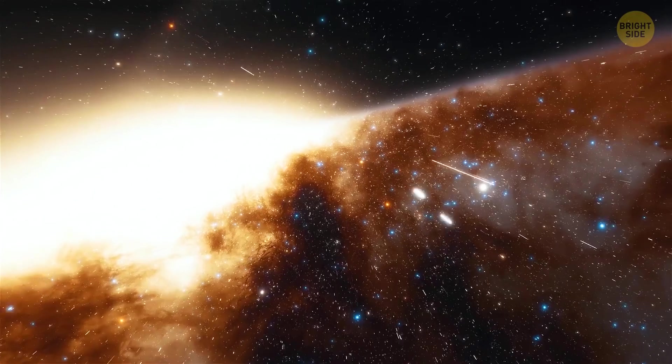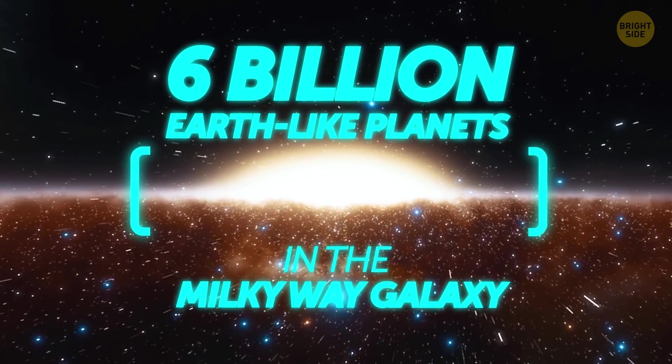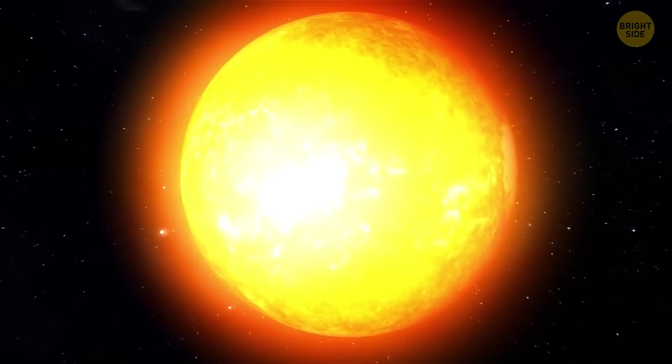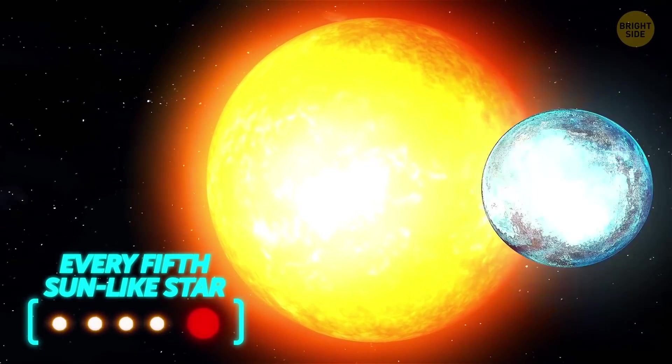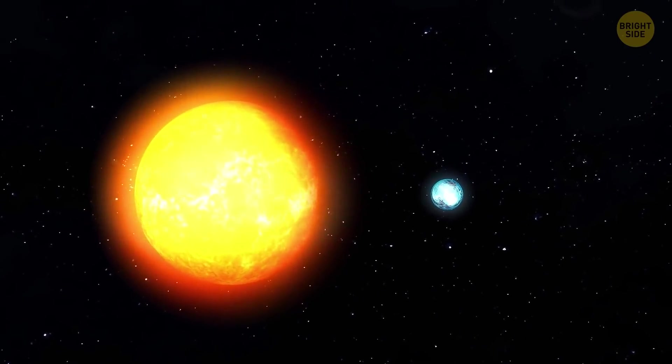Speaking of which, there just might be about 6 billion Earth-like planets in the Milky Way galaxy alone. The latest data has shown that every fifth sun-like star can have at least one planet in its habitable zone.